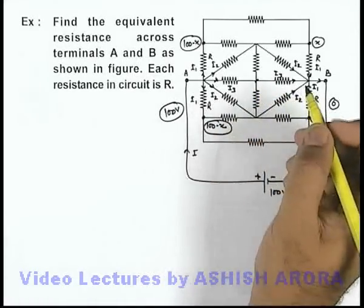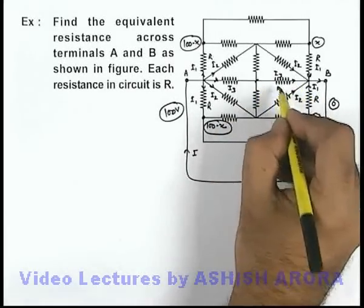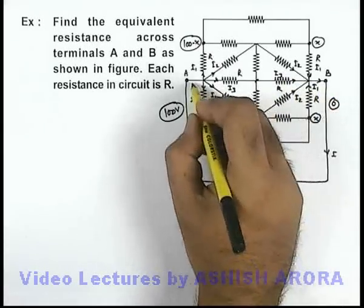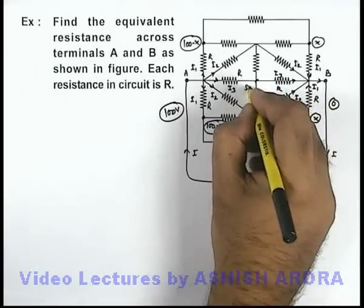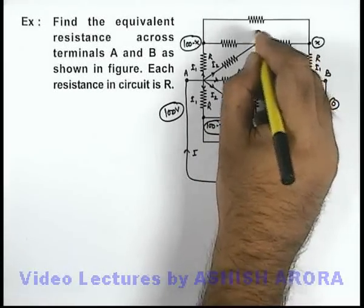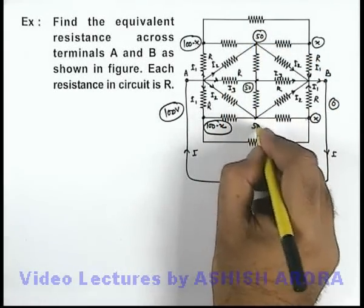If we talk about this terminal, for these 2 resistances same current, same potential difference - here it is zero, here it is hundred - that means potential here must be 50. And with the same logic you can say that potential at these terminals will also be 50.